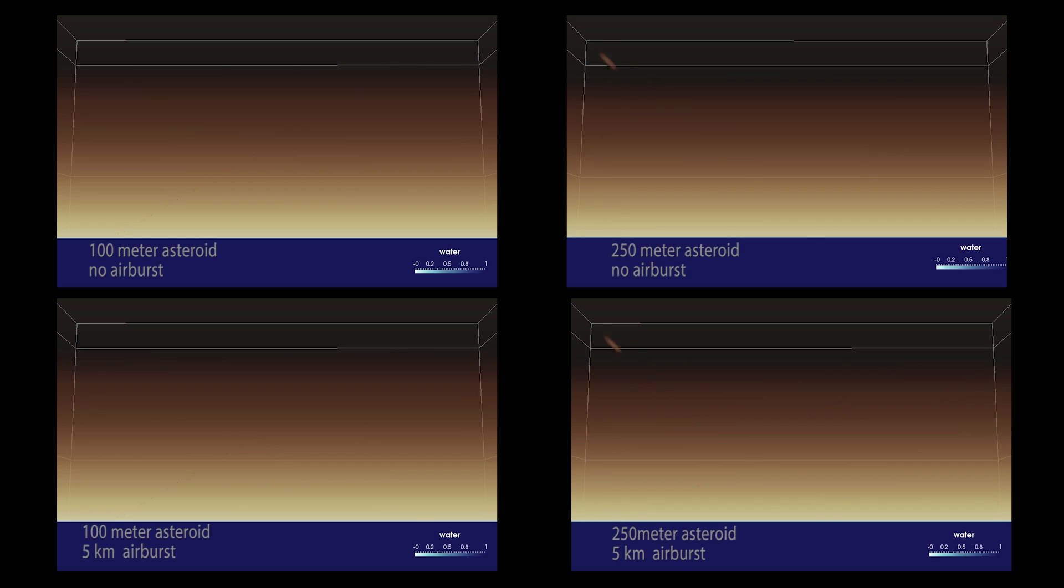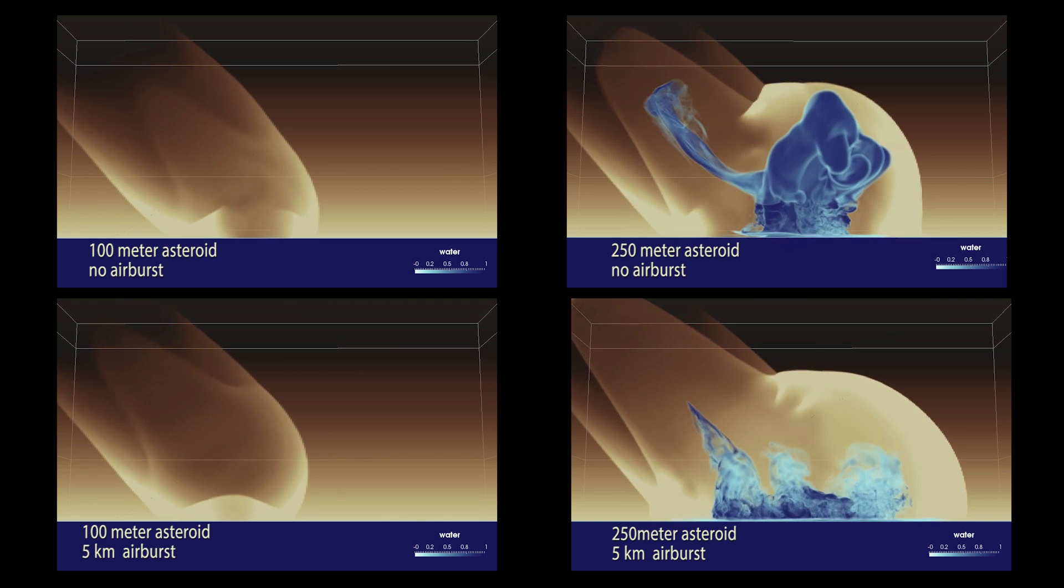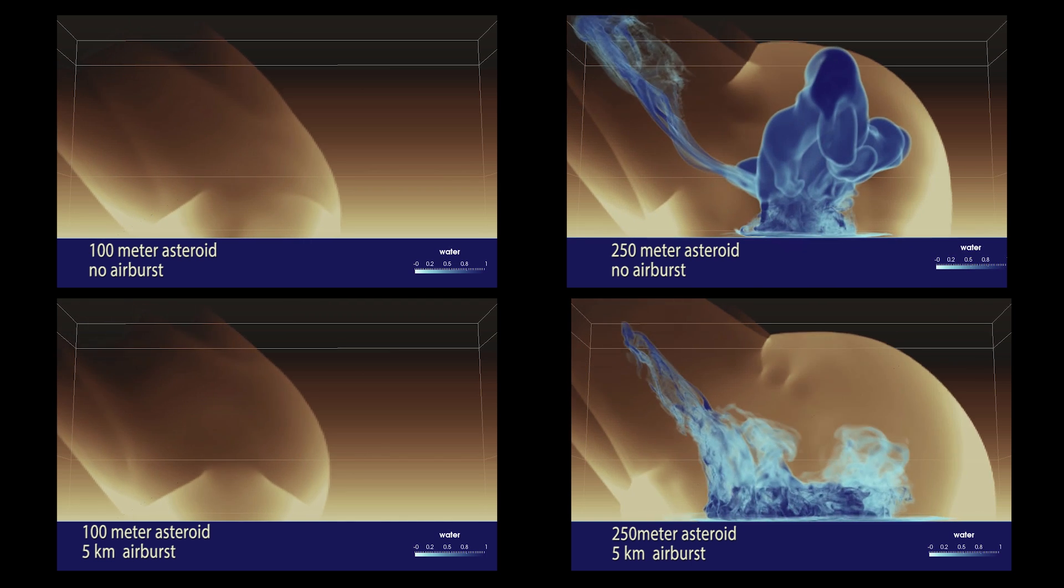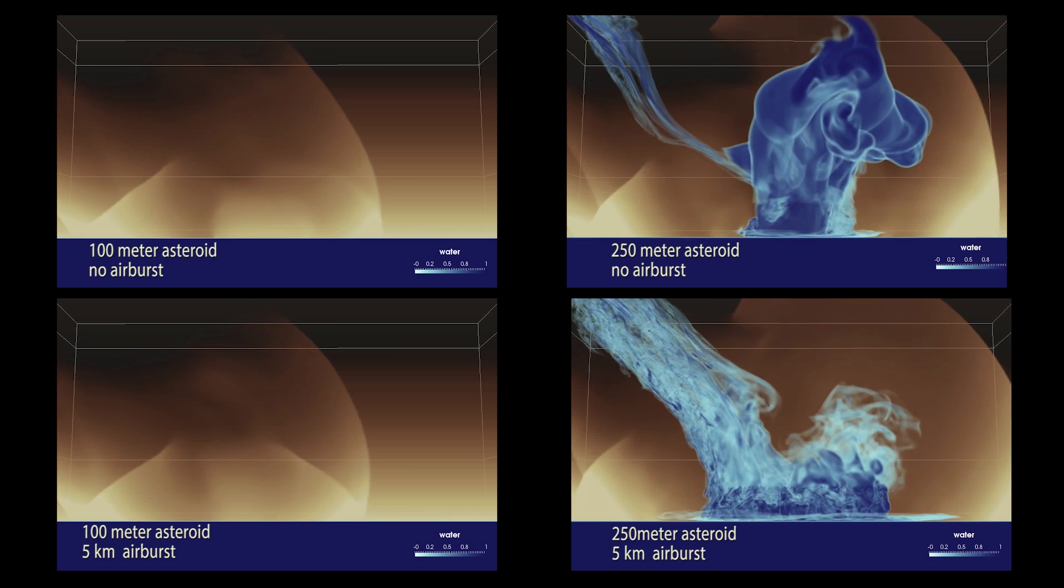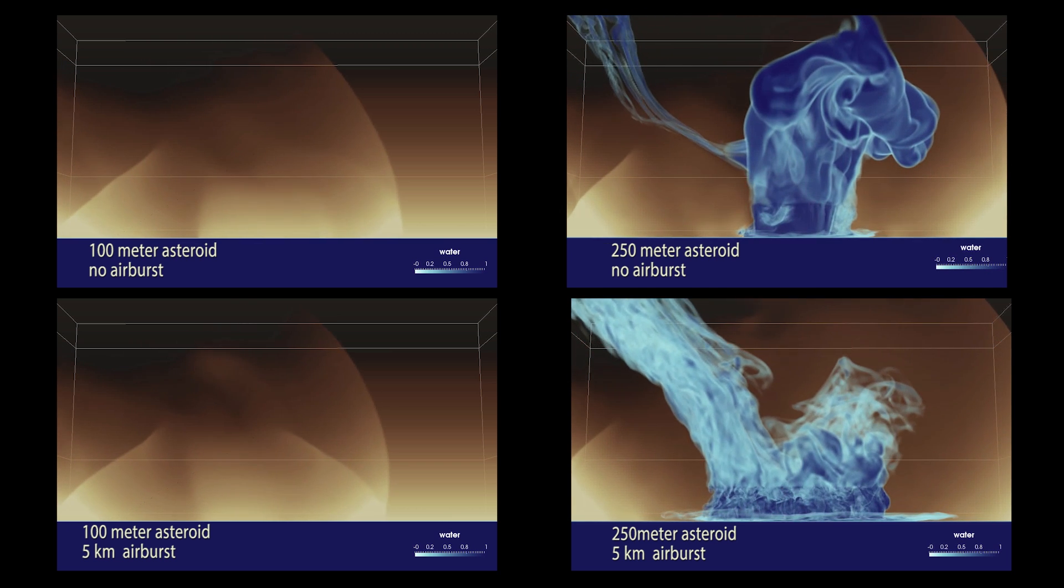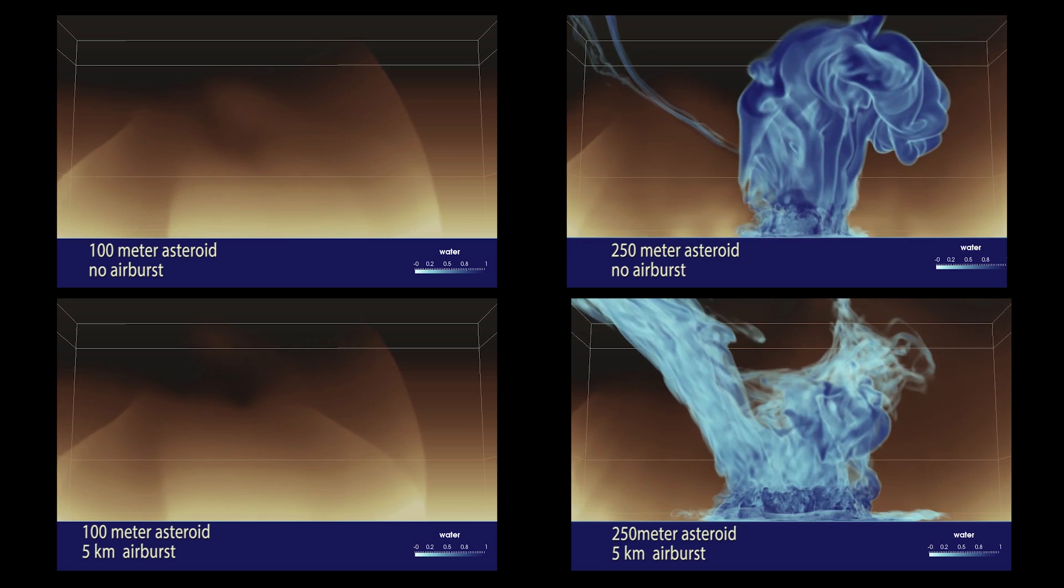By studying different runs from the ensemble, we see the effects of varying asteroid size, angle of impact, and airburst. Here, a light-colored pressure wave shows the asteroid's effect on the atmosphere. In addition, a large plume of water rises from the largest asteroid impact. Clearly, more kinetic energy is transferred to the water in this simulation.